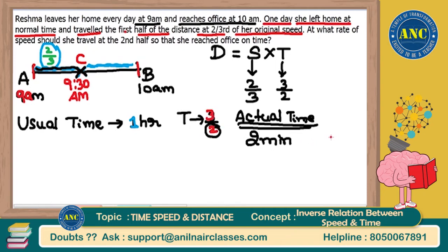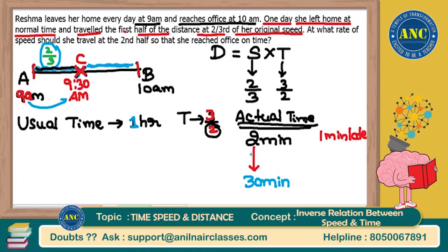But today she took 3 minutes, so she is late by 1 minute. But according to the question, the usual time taken to reach the midpoint is not 2 minutes — it is 30 minutes, from 9 o'clock to 9:30. She will usually take 30 minutes to reach the midpoint. So 2 is becoming 30 — multiply by 15. Then 1 also multiplied by 15 gives 15 minutes late.